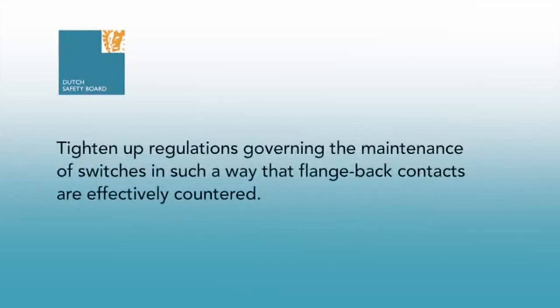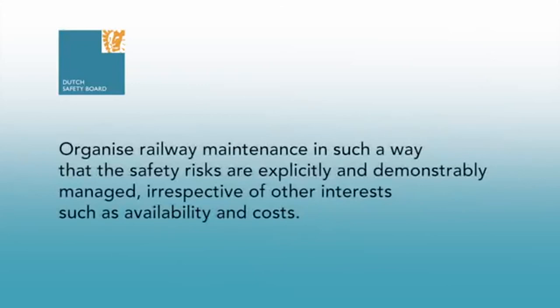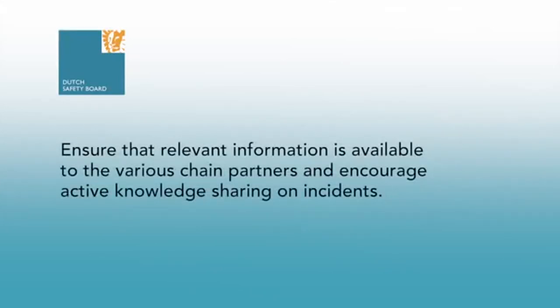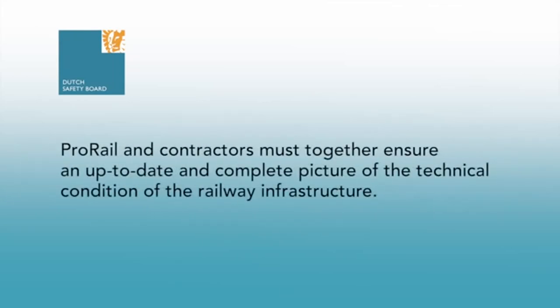On the basis of its investigations, the Dutch Safety Board has issued the following recommendations: Tighten up regulations governing the maintenance of switches in such a way that flangeback contacts are effectively countered. Organise railway maintenance in such a way that the safety risks are explicitly and demonstrably managed, irrespective of other interests such as availability and costs. Ensure that relevant information is available to the various chain partners, and encourage active knowledge sharing on incidents. ProRail and the maintenance contractors must together ensure an up-to-date and complete picture of the technical condition of the railway infrastructure.